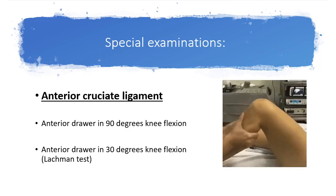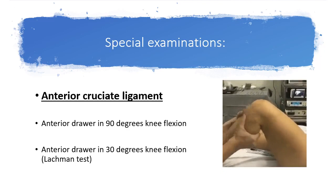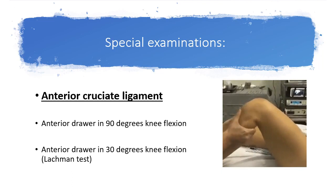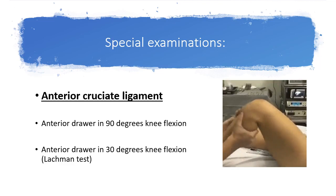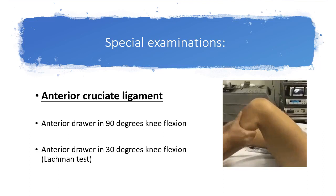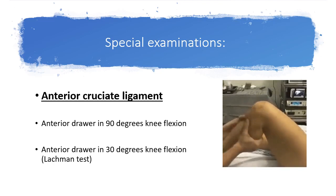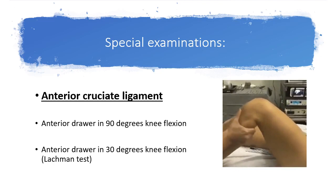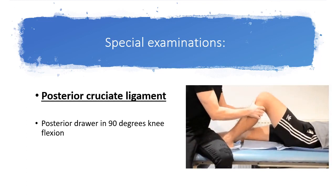Now the special examinations, which should be easy to remember after reviewing the anatomy. For the anterior cruciate ligament, perform the anterior drawer test — anterior translation of the tibia in relation to the femur. Note this is an exaggerated example; normally it's more subtle and you may need to compare with the contralateral side. The knee is kept at 90 degrees of flexion. If you perform the anterior drawer test with the knee at 30 degrees of flexion, that is called the Lachman test, which is more sensitive. For the PCL, perform the posterior drawer test with the knee at 90 degrees and push the tibia posteriorly.